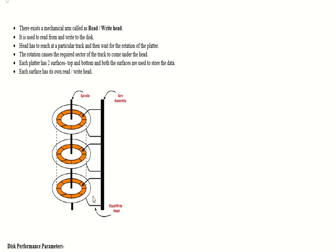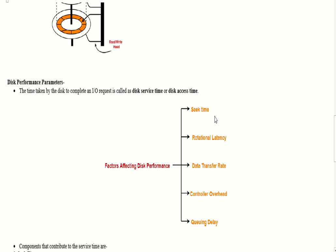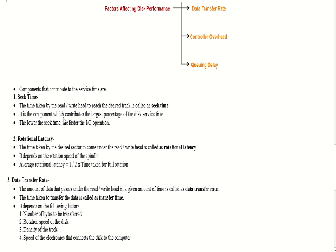Now we look at performance parameters — the characteristics on which disk performance depends. There are five points: Seek Time, Rotational Latency, Data Transfer Rate, Control Overhead, and Queuing Delay. Seek Time is the time taken by the read-write head to reach a desired track. It is the component that contributes the largest percentage of disk service time. The lower the seek time, the faster the input-output operation.